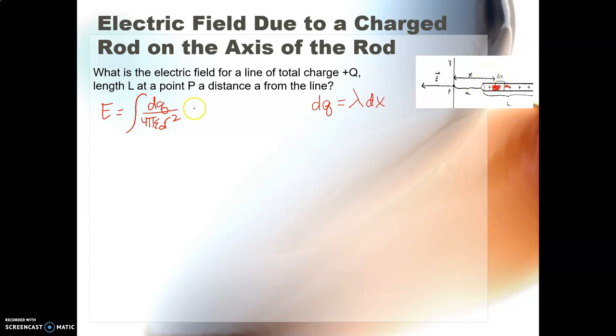So let's do that. So that's going to give us the integral of λ dx over 4πε₀x². And of course, we need limits. Since we're integrating over x, our first x starts at a distance a away from point P. And it's going to end up here, a distance L plus a away. So my upper limit should be L plus a.